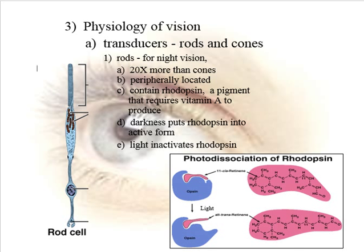A student asks what the term is for when it takes a long time to get back — dark adaptation. Now part of dark adaptation, of course, is dilation of the pupil as well, but the actual changing back into the active cis form takes quite a while.